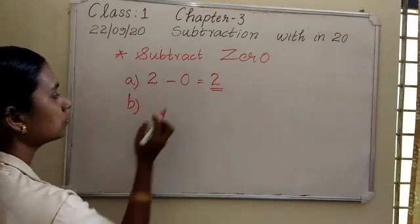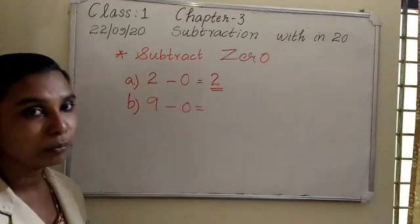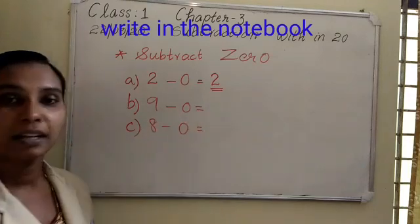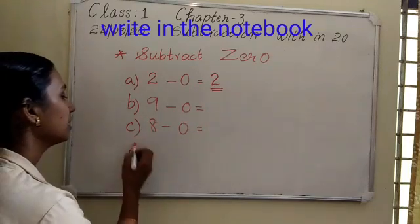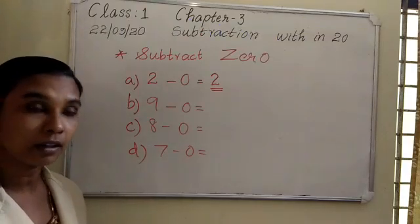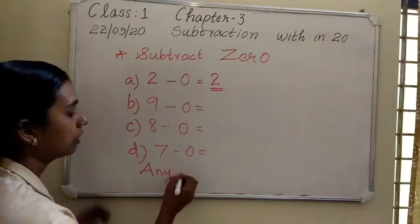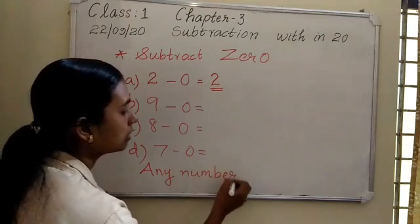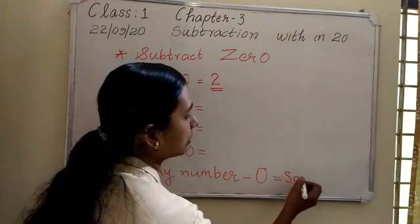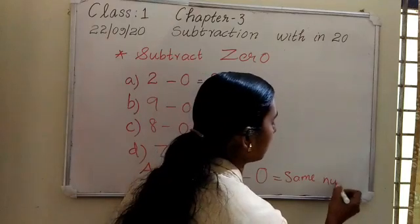More examples: 9 minus 0 — what is it? 9. Then 8 minus 0 — what is it? 8. Then 7 minus 0 — same number, 7. So we can conclude: any number minus 0 equals the same number itself.